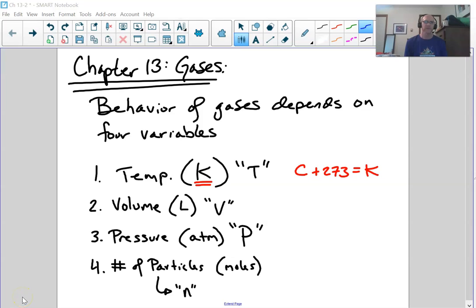This screencast corresponds to chapter 13 on the behavior of gases and the gas laws. In particular, today we will cover the combined gas law. You should know that behavior of gases depends on four variables: temperature in degrees Kelvin. It's important to recognize that all temperatures in the gas laws chapter will be in Kelvin degrees. If you do your mathematics in degrees Celsius, it will not work.